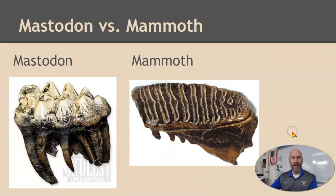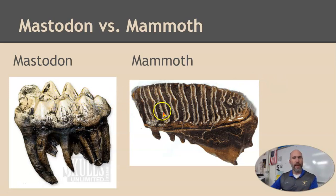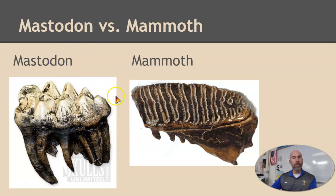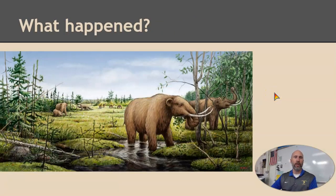We looked at mastodons versus mammoths, specifically their teeth. The mastodon has a more ridgy, bumpy top — more similar to what we have. The mammoth's teeth were much more flat. The reason for that is the food they were eating: mastodons tended to live in a more woody area, so they were able to eat shrubs and tougher material, while mammoths were almost strictly eating grass. We know that from their teeth. Think about the tundra versus the forest, and as our climate was changing, how these animals were impacted — if there's less of something or more of something, that's going to change how a creature lives.